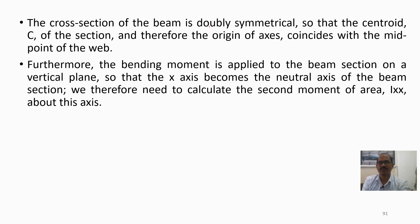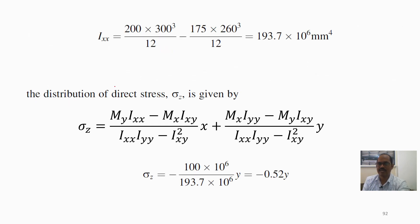The given cross-section is doubly symmetrical, so the centroid C of the section — and therefore the origin of the axes — coincides with the midpoint of the web. In that case, Ixy equals 0, since it is a doubly symmetrical cross-section. Since the bending moment is applied in a vertical plane, the x-axis becomes the neutral axis, and we need to calculate only the second moment of area Ixx about that axis.